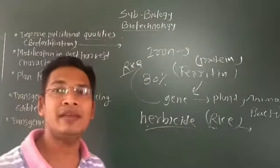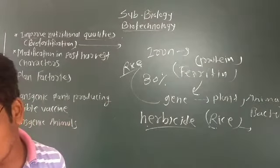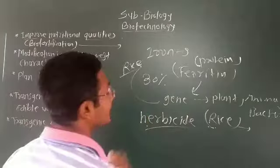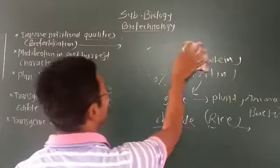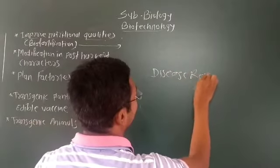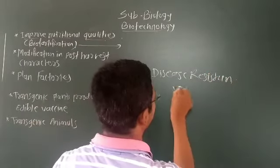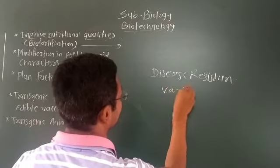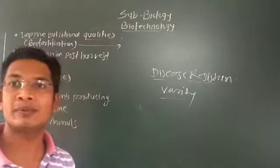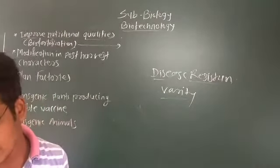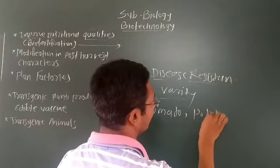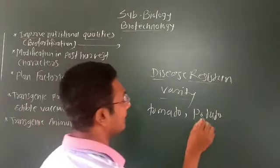Through genetic engineering, herbicide-tolerant varieties have been designed in maize, wheat, and many other monocot plants. After that, genetic engineering is also used for disease-resistant plant varieties — for example, disease-resistant varieties of tomato, potato, and other economically important plants are developed.